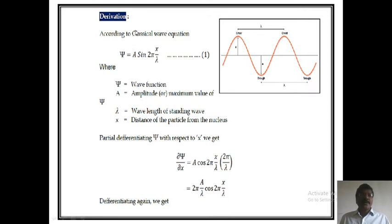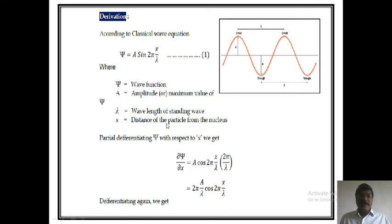Now, let us derive the Schrödinger wave equation. An electron does not move around the nucleus in a fixed orbit. According to the classical wave equation, the wave associated with a particle in a coordinate system is ψ = A sin(2πx/λ). This is equation 1. Where ψ is the wave function, A is the amplitude or maximum value of ψ, λ is the wavelength of the standing wave, and x is the distance of the particle from the nucleus.